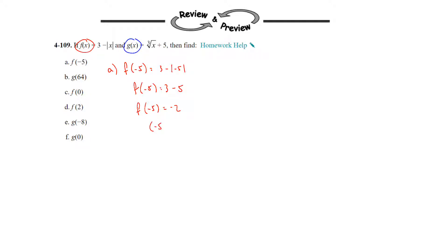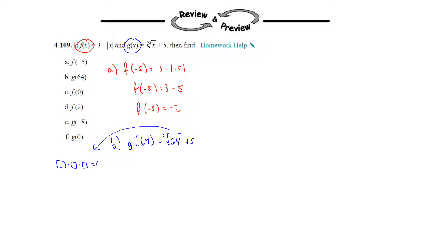Remember what this means: the input is negative 5 and the output is negative 2. Just be aware that you are finding the output when the input is negative 5. On the next one we have the g function, so we're looking for g of 64. Plug in 64 for x — that's the cube root of 64 plus 5. The cube root of 64 means what number times itself 3 times gives you 64. That number is 4, since 4 times 4 times 4 is 64. So 4 plus 5 is 9, and g of 64 is equal to 9.